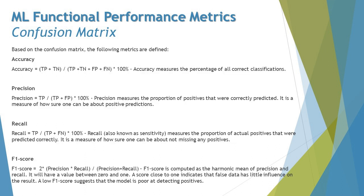Based on the confusion matrix, the following metrics are defined: Accuracy, Precision, Recall, and F1 Score. The most important final measure is the F1 Score, and to evaluate it we need Precision and Recall. And in order to get Precision and Recall, we start with Accuracy.